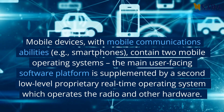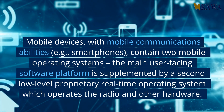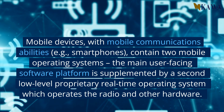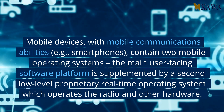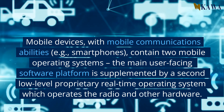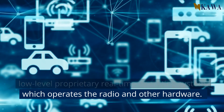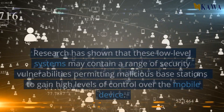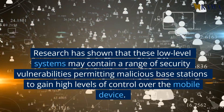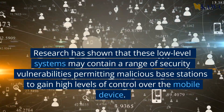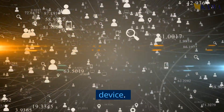Mobile devices with mobile communications abilities, for example smartphones, contain two mobile operating systems. The main user-facing software platform is supplemented by a second low-level proprietary real-time operating system, which operates the radio and other hardware. Research has shown that these low-level systems may contain a range of security vulnerabilities, permitting malicious base stations to gain high levels of control over the mobile device.